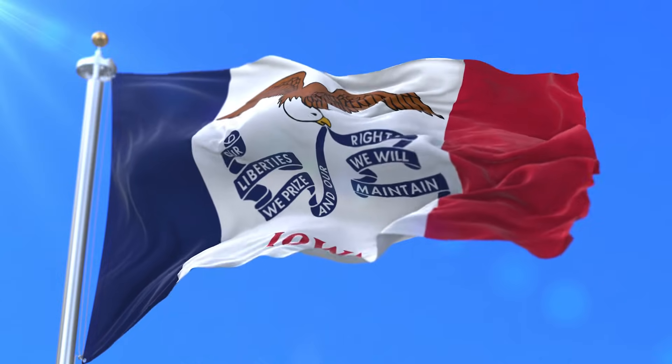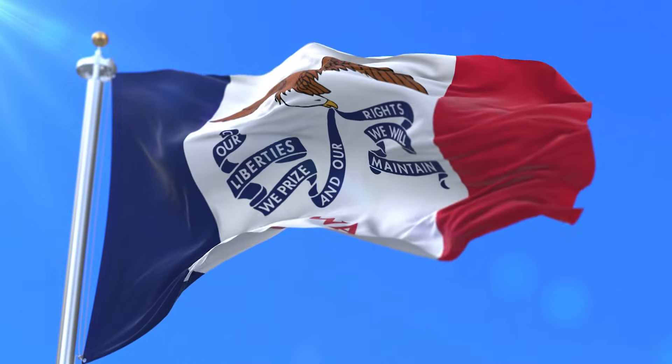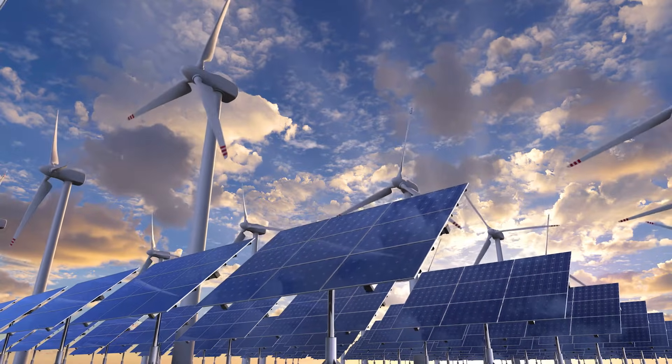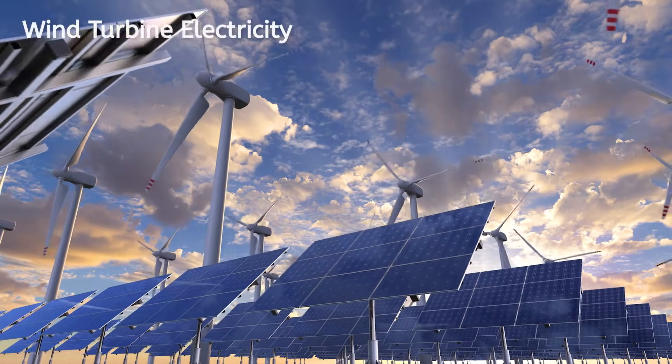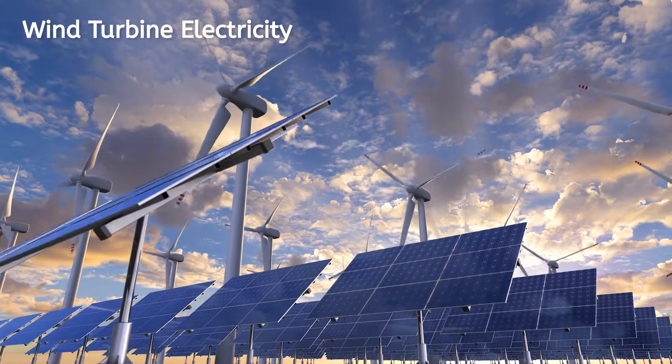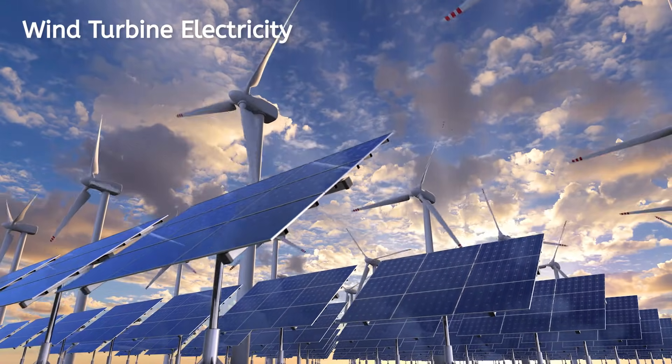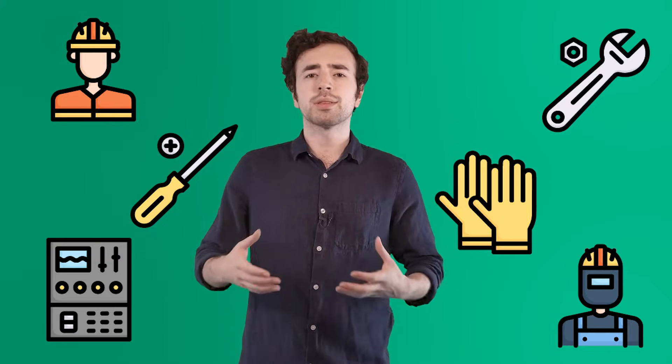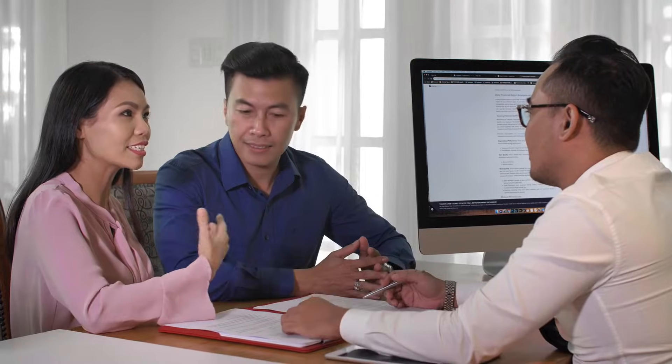This state also has a huge economy in agriculture and wind energy. They're second in the US for renewable energy, like wind turbine electricity. This type of electricity is safe for the environment. In contrast, service is the biggest economic source in Iowa. What's service, you say? Well, service is any job that provides a service instead of a product. Things like insurance, banking, and education.